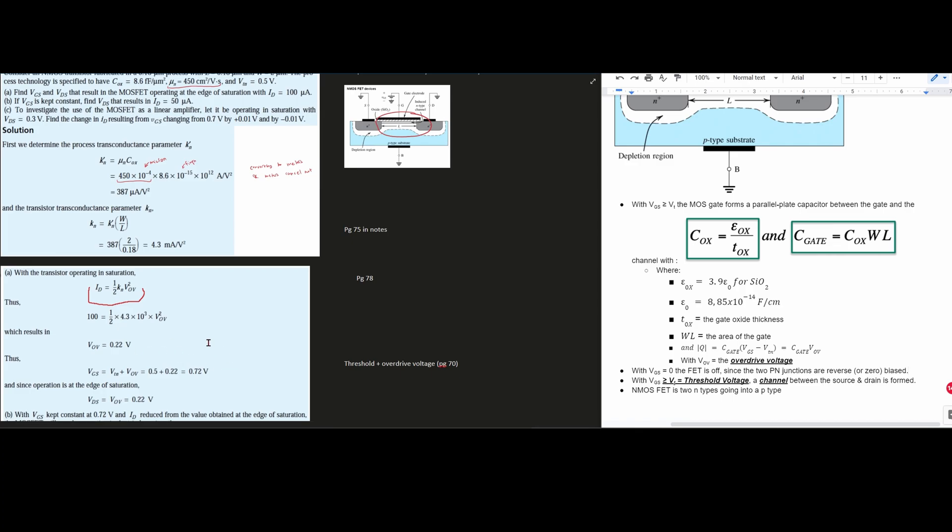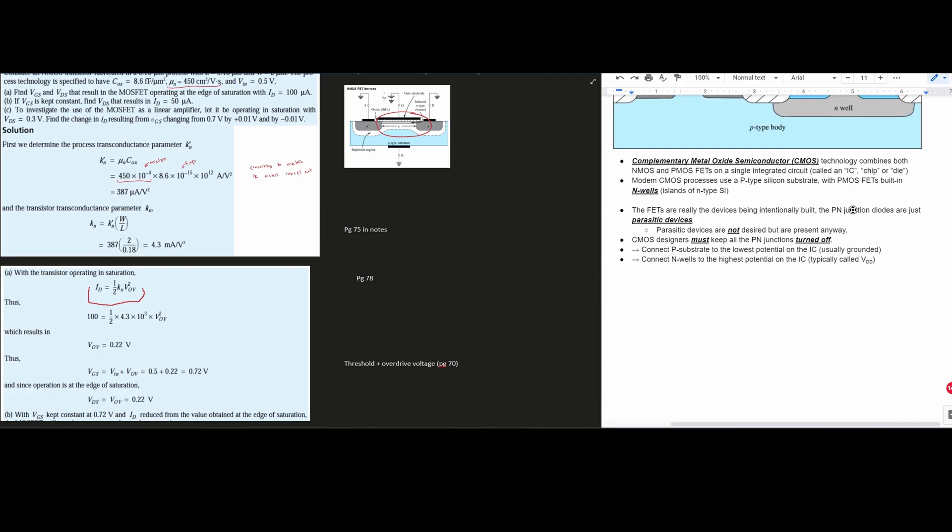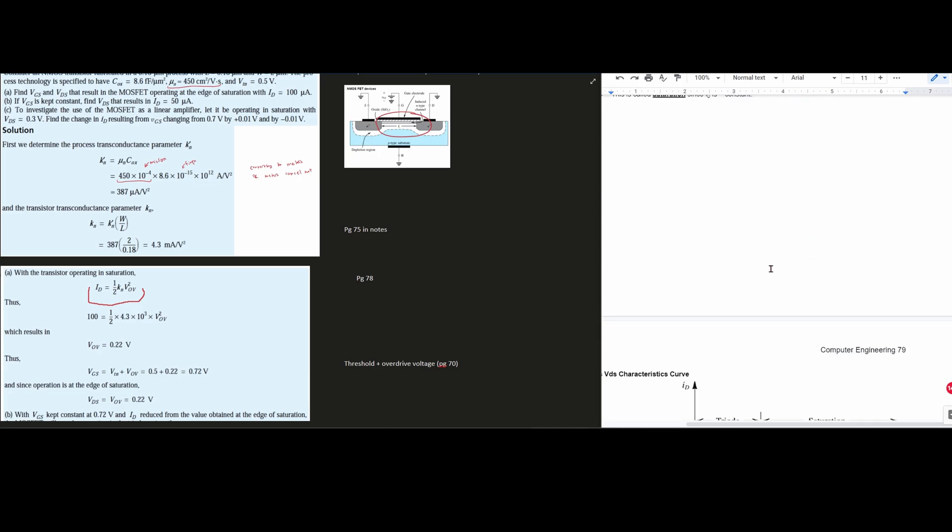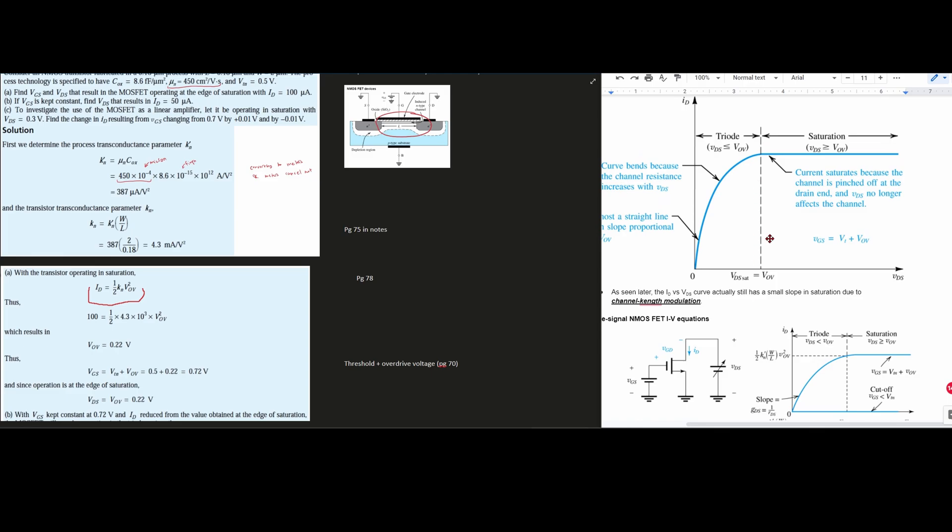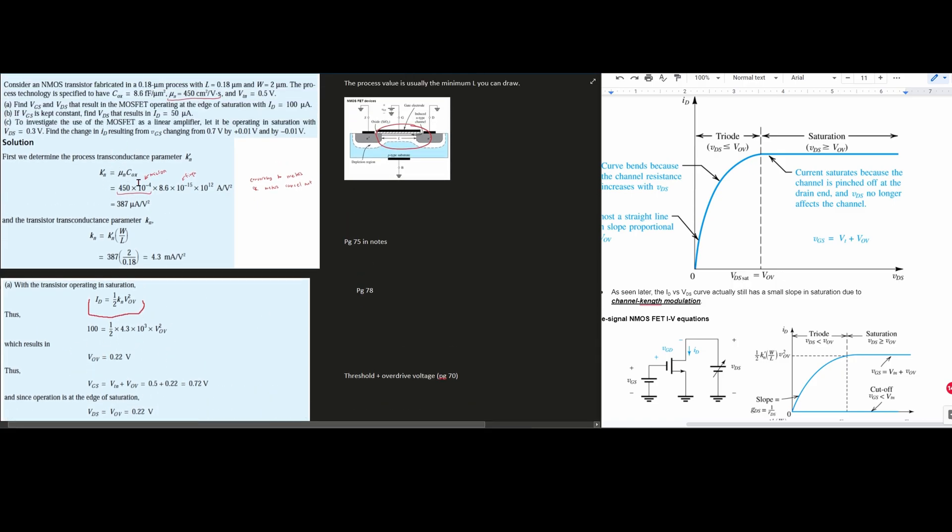And since operation is at the edge of saturation, our VDS is going to be equal to our VOV. And if we look at page 79, we're going to come up with a little bit of information. Notice that we have our VGS equal to VT plus VOV. Since we're at the edge of saturation, which is right here, it gets pinched off. Our VDS, just like it says right here, is equal to our VOV. So our VDS is equal to the overdrive voltage. So our VDS is going to be 0.22 volts, the same as our overdrive voltage. So that answers A. Find VGS and VDS. Our VGS is going to be 0.72, and our VDS is 0.22 volts.